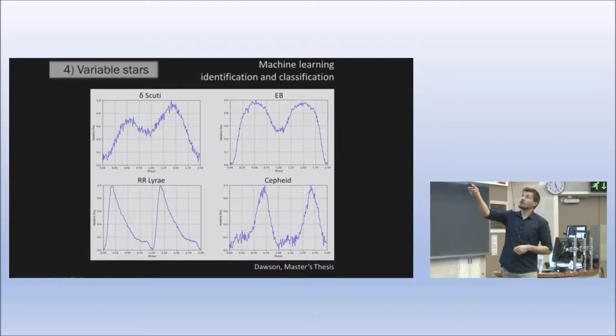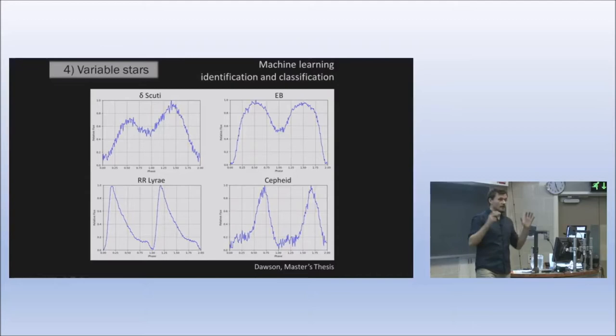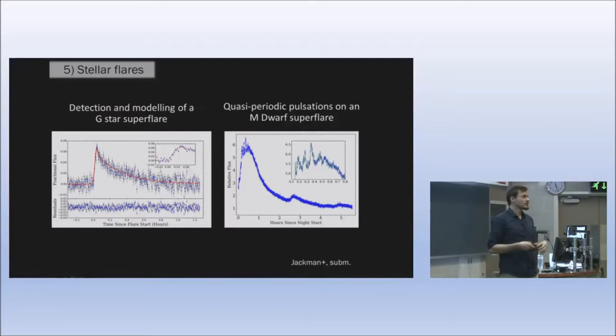We can also study a lot of variable stars. We cover hundreds of thousands of stars over our four year lifetime. Obviously we don't want to go through all these by eye, it would take a lifetime of work. Instead we employ machine learning tools to identify and classify some of these objects.